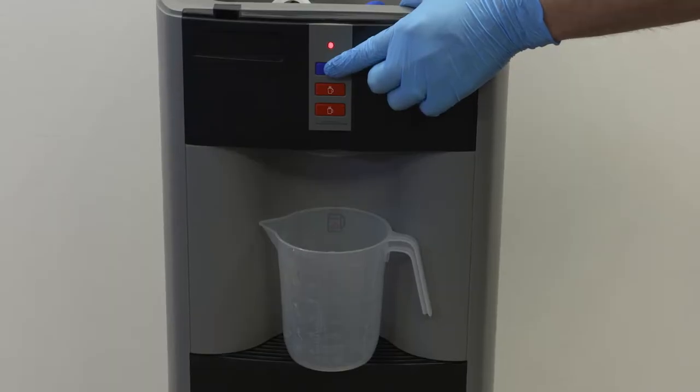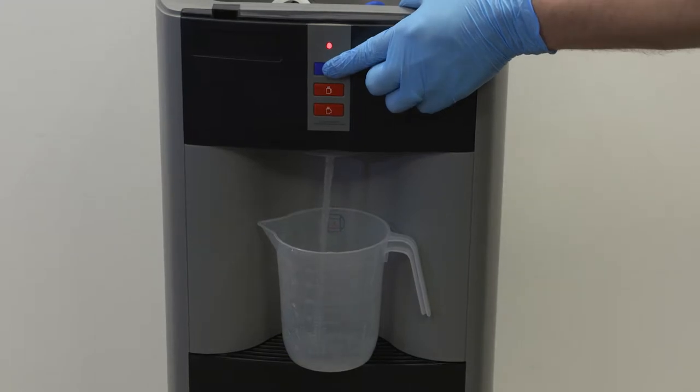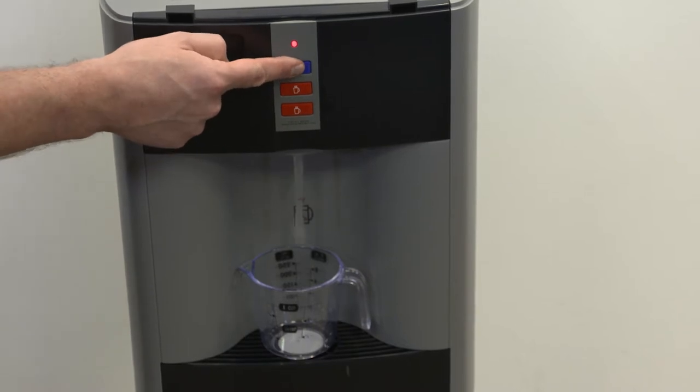Press and hold the cold water button so that cold water is dispensed from the faucet. Dispense approximately 500 milliliters of water to make sure the sanitization liquid has entered into the machine. You can verify this by using a peroxide test strip.